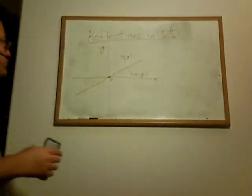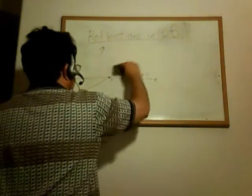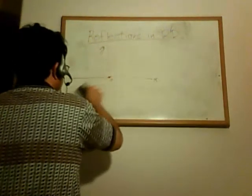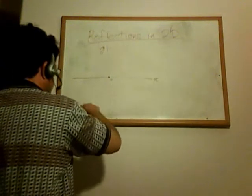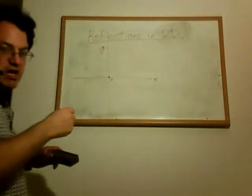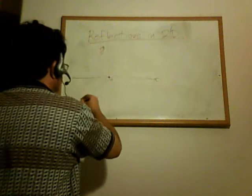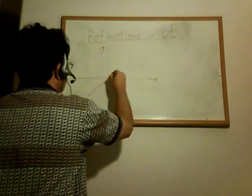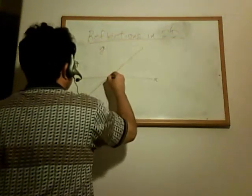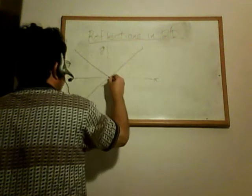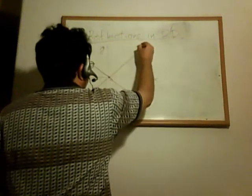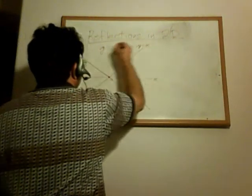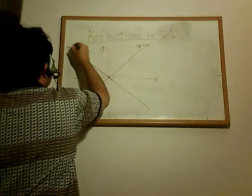So I drew an arbitrary axis here, but the four types of reflections I'm going to talk about are reflections about the x-axis, reflections about the y-axis, and then reflections about these diagonal axes. So we have the line y equals x, and the line y equals minus x.